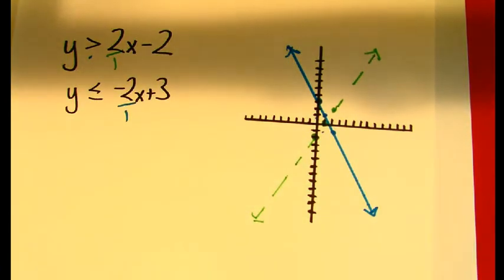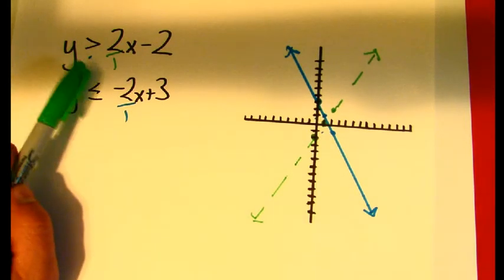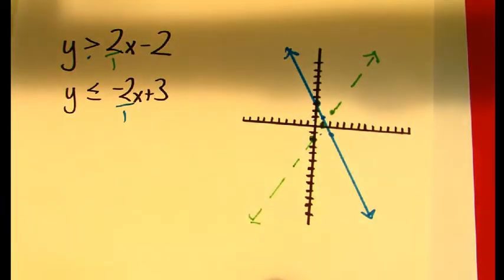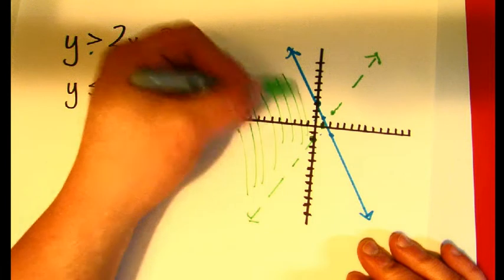Now what I'm looking for is the graph part, or the shading part, which represents where all the answers are. This is greater than 2 over 1 x minus 2, so I need to shade up. It's sort of like, if you could pour water on it, then it's the top, so I'm just going to shade up right through here.